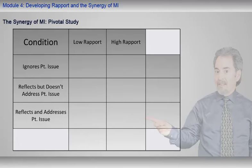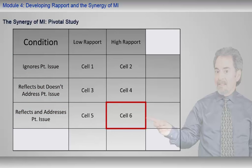In the research design, the rapport dimension had two conditions: low rapport vs. high rapport. The sense-making dimension had three conditions: ignoring the patient's issue, reflecting the patient's issue but not addressing it, and both reflecting and addressing the patient's issue. Of the six cells in the design, MI is cell 6, defined by high rapport and by both reflecting and addressing the patient's issue.